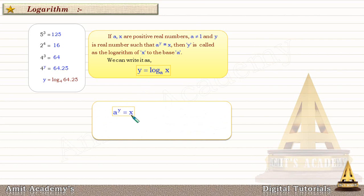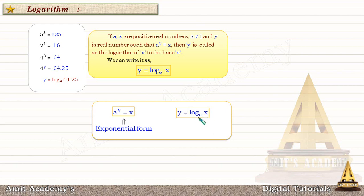The form a raised to y is equal to x is called the exponential form. And from this exponential form, the corresponding logarithmic form is y is equal to log x to the base a. In exercises, we have to convert either exponential form into logarithmic form or logarithmic form into exponential form.